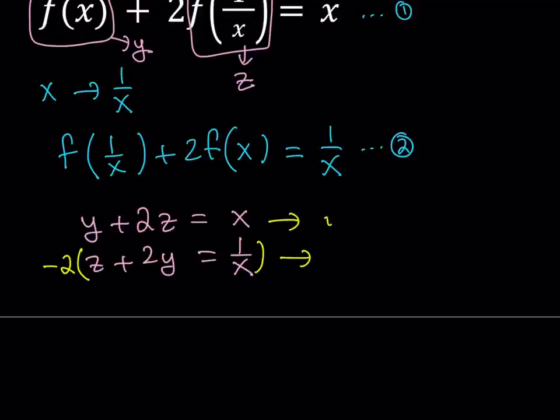So the first equation is going to stay the same. And I'm going to multiply by negative 2 here, negative 2z minus 4y equals negative 2 over x. And I'm going to rewrite it.